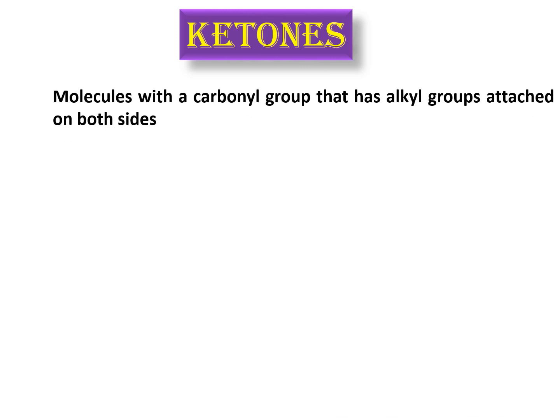Ketones are organic molecules with a carbonyl functional group that has alkyl groups attached on both sides of the carbonyl group. This is how a general ketone looks like — you have this carbon-oxygen double bond, which we call the carbonyl functional group, and it has alkyl groups attached on both sides. These alkyl groups could be similar groups having the same number of carbon atoms, or they may have different numbers of carbon atoms.